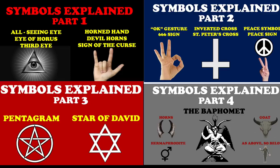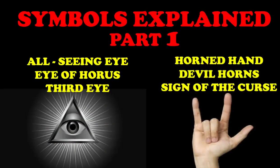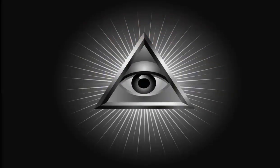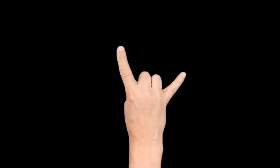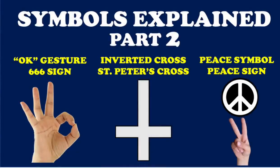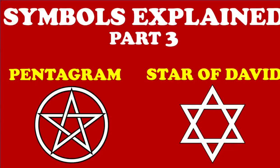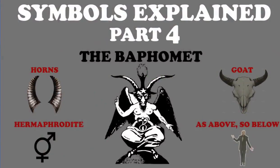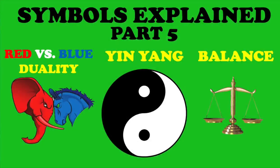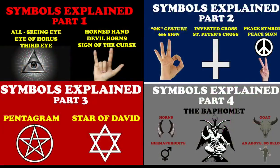In this series we have discussed many different types of symbols. In part one we discussed how symbols are used, then the all-seeing eye, also known as the eye of Horus and the third eye. We discussed the horn hand sign, also known as the devil horns or sign of the curse. In part two we discussed the 666 hand sign, the inverted cross, and the peace sign. Part three we went over the pentagram and the Star of David. In part four we discussed the Baphomet. In part five we discussed the yin yang symbol and the esoteric concept of duality.